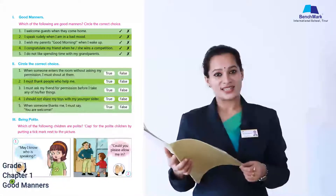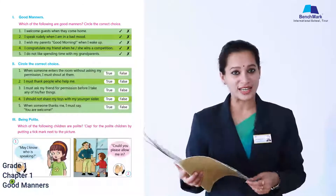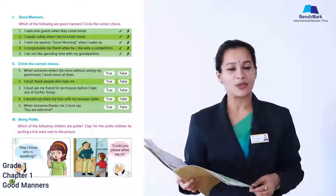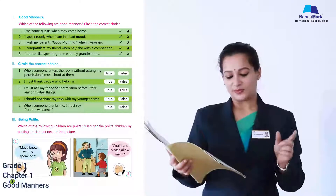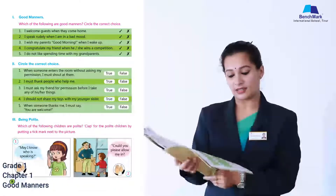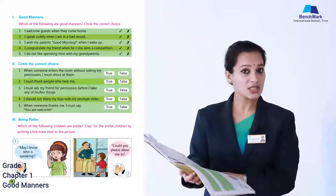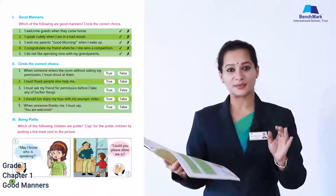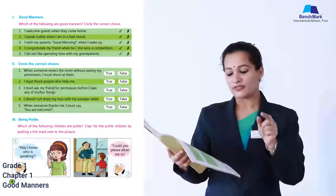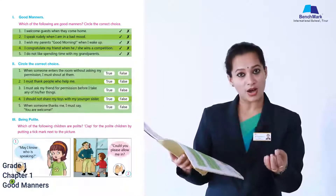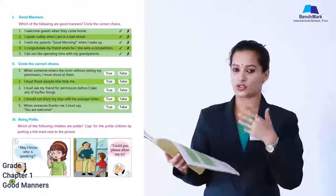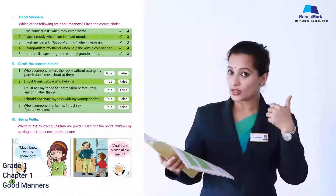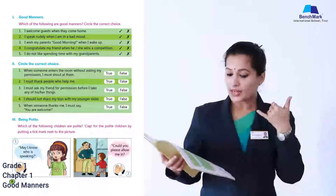With that we finished the second part of the exercises. Roman numeral three is about being polite. Which of the following children are polite? Clap for the polite children by putting a tick mark next to the picture.